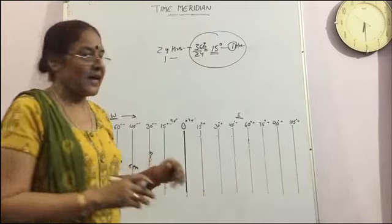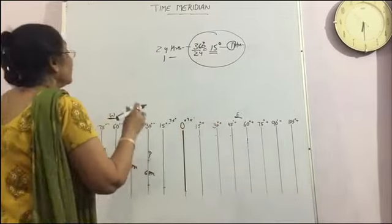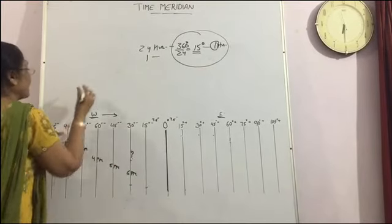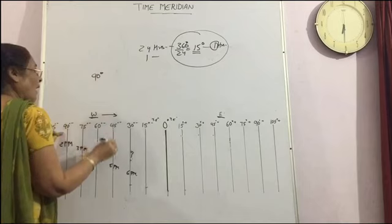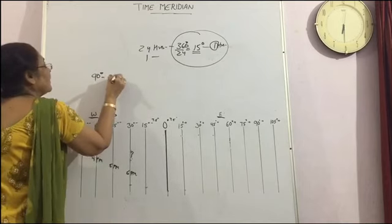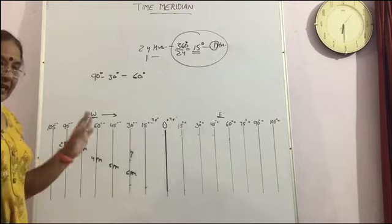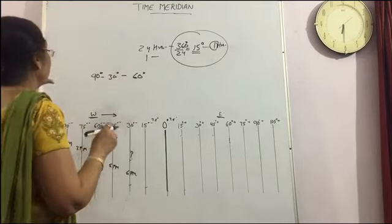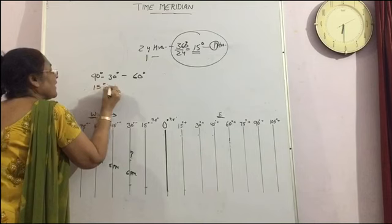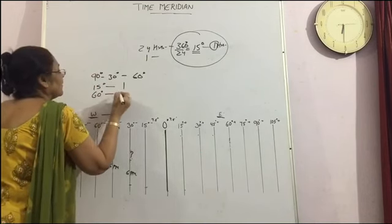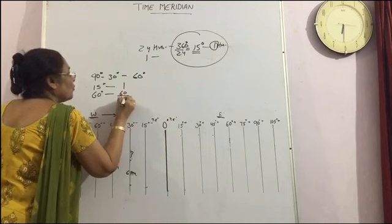The other way to calculate the time if this diagram is not there. We will take the difference of 2 meridians. Let's take the difference means the 90 degree meridian and the 30 degree meridian. So total 60 degree meridian. Here we get the 60 degree meridian. 15 degree meridian we will cover in 1 hour.